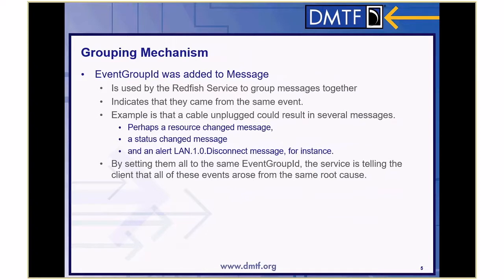We added event group ID to the message. We found ourselves in circumstances where you could get a resource changed message, a status change message, and a link disconnect message all from the same underlying event. How do you know those weren't three different events, or just one event generating three different messages? That's what event group ID is for — it will have the same value for all three messages if they all really come from the exact same event.